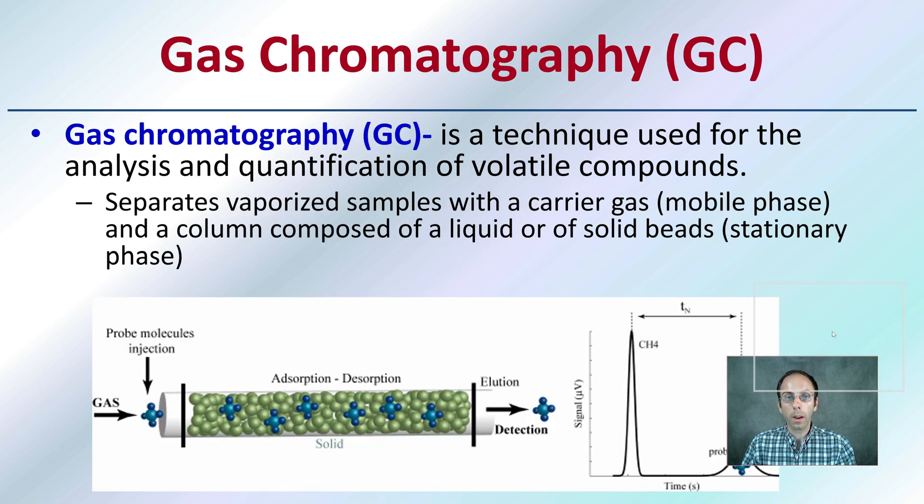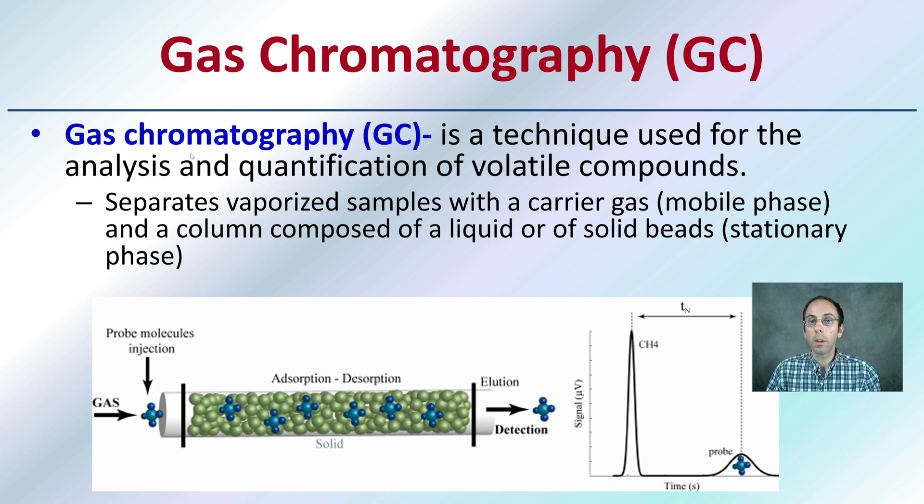We also have something called gas chromatography, or GC. This is a technique used for the analysis and quantification of volatile compounds. It separates vaporized samples with a carrier gas as the mobile phase and a column composed of a liquid or solid beads as the stationary phase.